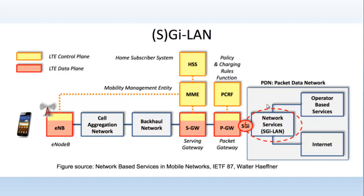As you can see from the diagram, the SGI is the interface from the Packet Gateway towards the PDN, that is the Packet Data Network. So, that is basically what these two interfaces mean. These are standard interfaces. In general, you can describe SGI LAN as the IP network infrastructure that is immediately on the PDN side of the SGI or GI interface. You can also say it implies the network interconnected towards the interfaces from the GGSN and the Packet Gateway.